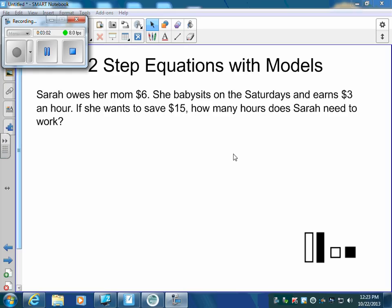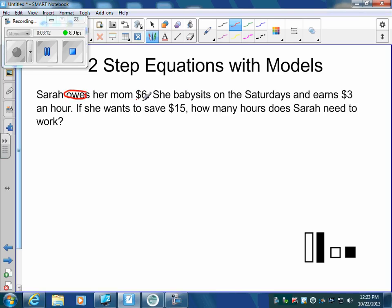Now again, we're not solving. We just want to build that equation. So we know that she owes her mom $6. And owes means it's got to be subtraction. It's got to be a negative. She also earns $3 an hour. That means the first hour, the second hour, the third hour, the fourth hour. So right there, it tells us our hours are changing.